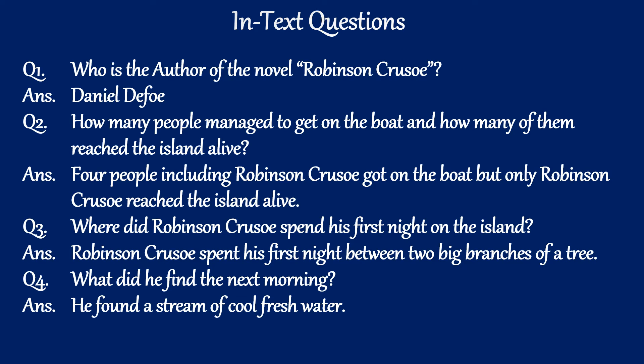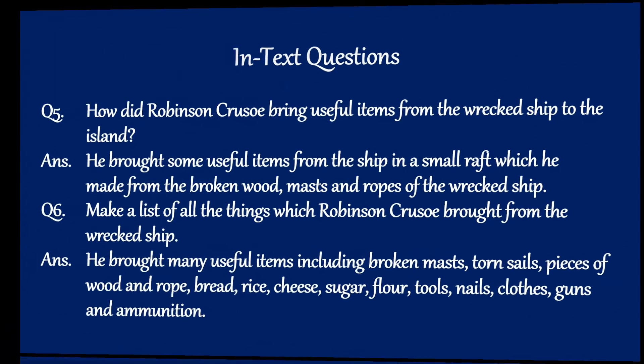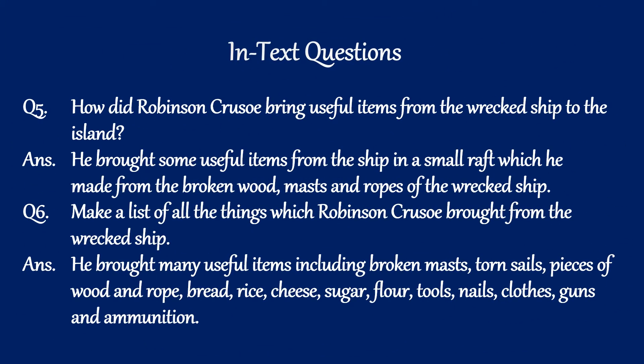Question four: What did he find the next morning? Answer: He found a stream of cool fresh water. Question five: How did Robinson Crusoe bring useful items from the wrecked ship to the island? Answer: He brought some useful items from the ship on a small raft which he made from the broken wood, mast, and ropes of the wrecked ship.